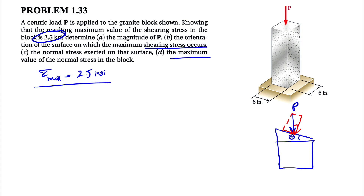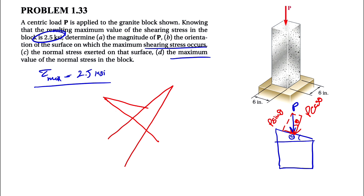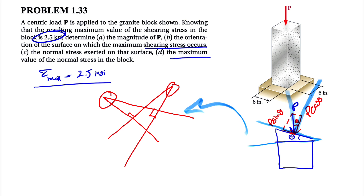If that angle is theta, this angle here is also theta. The perpendicular component would be P cosine of theta, and the parallel one would be P sine of theta. The reason that angle is theta is that when we have two lines each perpendicular to the other, these two angles are the same.